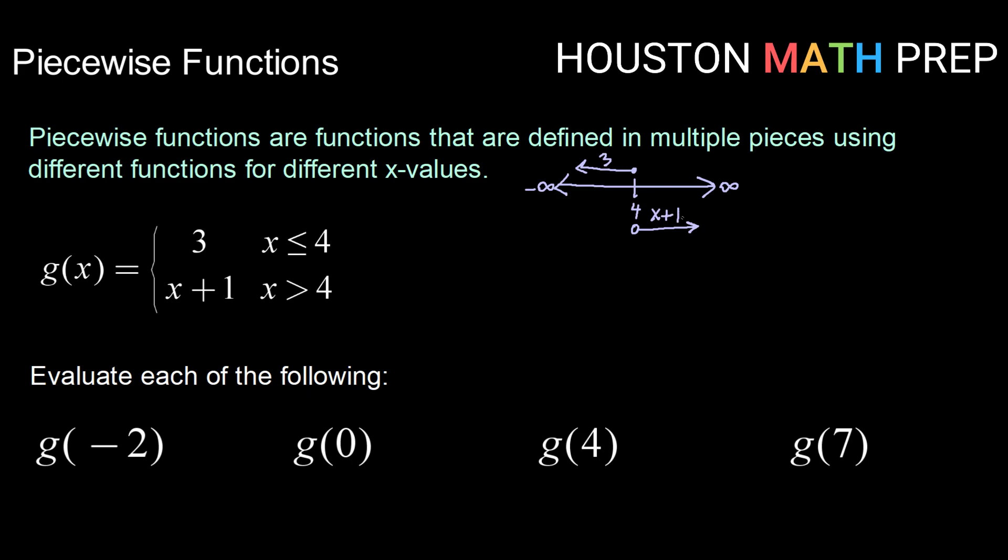For four not inclusive and above we're using the expression x plus one. So we're breaking up the x values at four. Anything below x equals four we're going to use three as our y value. And anything above four we're going to use the expression x plus one.